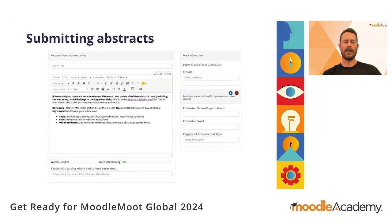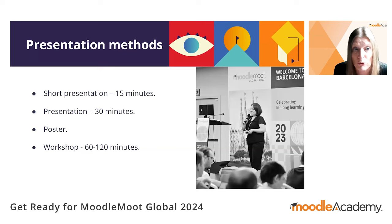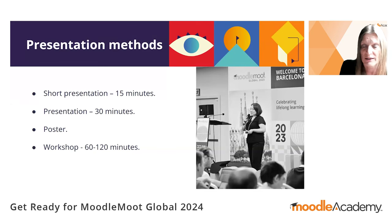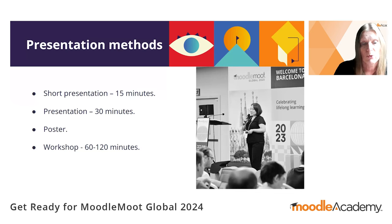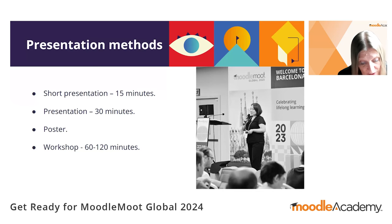I'm Mary Cooch, Education Manager at Moodle. For this moot we have four presentation methods. There's a short presentation, 15 minutes total — around 10 minutes speaking time and 5 minutes for questions. There's a longer presentation option of 30 minutes — 20 minutes talking and 10 minutes Q&A. If you're less confident about speaking, you can submit a poster, and we'll arrange a time when you can be standing by your poster to discuss it. Or you can do an interactive workshop between one hour and one and a half hours, giving participants hands-on experience around the different topics of the event.